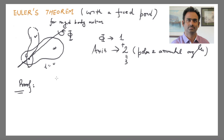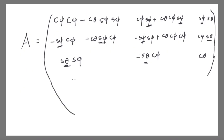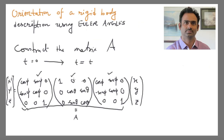Before we proceed with the proof, I will ask you to do two exercises. Let us go back to the matrix from the last video. You see, this is made up of three matrices, each of which is an orthogonal matrix. They are all orthogonal matrices and moreover their determinants are equal to one.